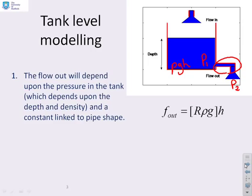Now, we should clarify that's the pressure difference between the bottom of the tank and the top of the tank, and therefore, in essence, the pressure difference between P1 and P2 will also be rho GH. So what we can say, therefore, is that the flow out will depend upon rho GH, which you'll see is given here, and it will have some constant, which here I've marked as R.